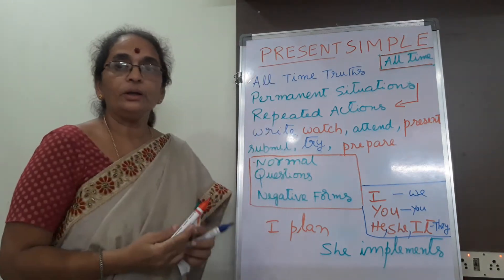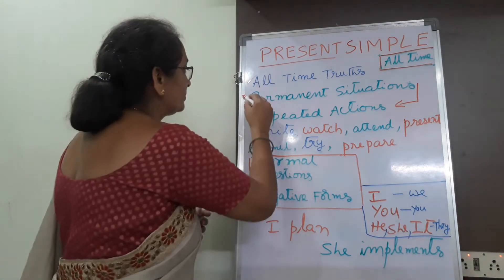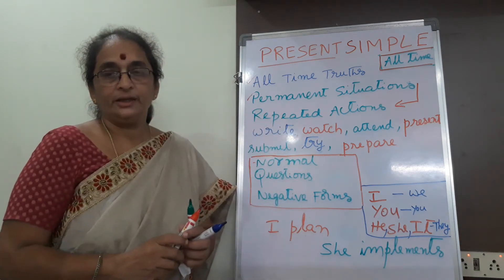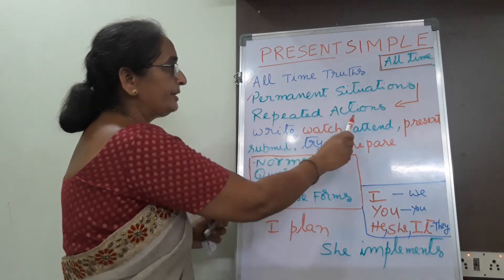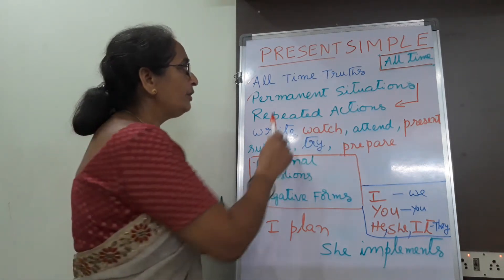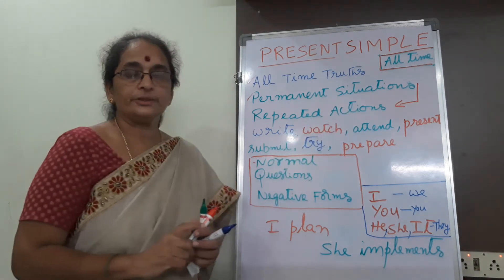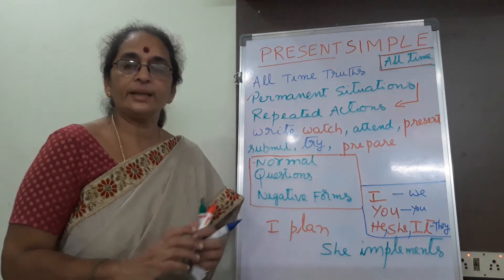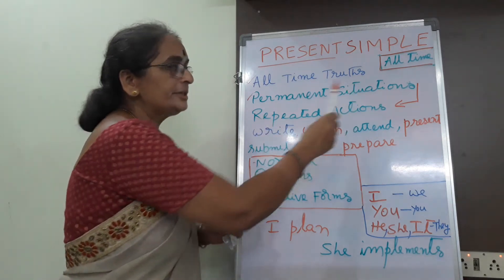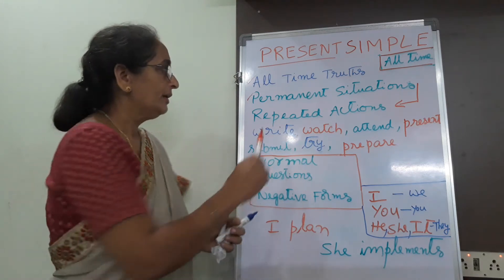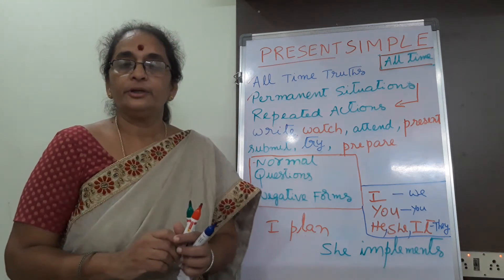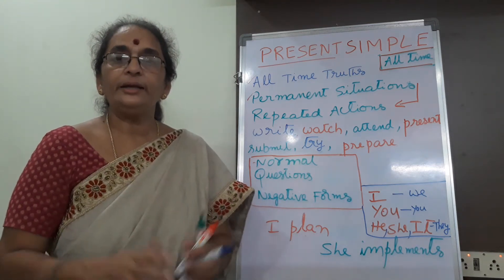We learnt about all-time truths. Now coming to permanent situations and repeated actions. We have permanent situations and repeated actions also in present simple tense. What do we mean by permanent situations? Let us take one example. Mother takes care of children — it is a permanent situation. Now let us go for another example of repeated action. You drink milk. I take coffee.